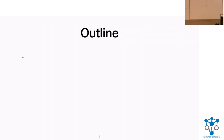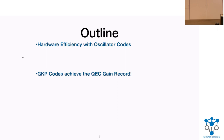Our work uses a code from the class of oscillator codes called GKP codes, and we stand at the position with the maximum gain in lifetime. The talk is outlined as follows: first, I'll tell you what these oscillator codes are and why we care about them. Then I'll tell you about this work where we achieved the QEC gain record. Finally, I'll conclude with some closing remarks about how to use this qubit further.